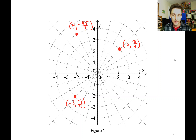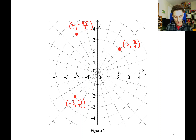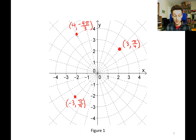Let's go through more examples, like (4, -π/3). In this case, the theta is negative. You're going to rotate to negative pi over 3, so you're along this line here, and then go positive 4 in that direction. So there's (4, -π/3).